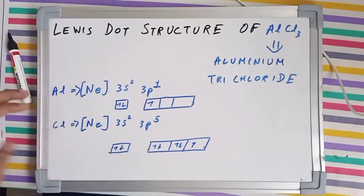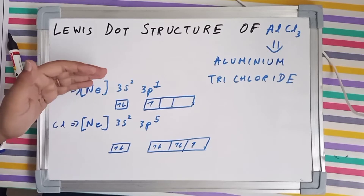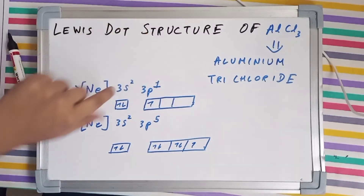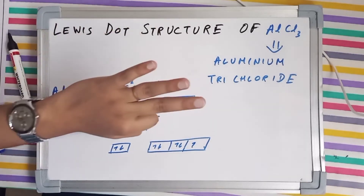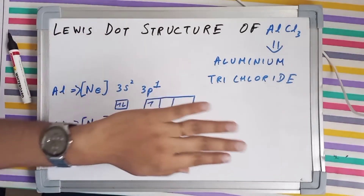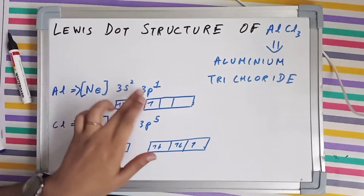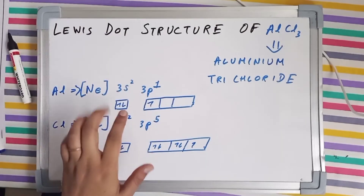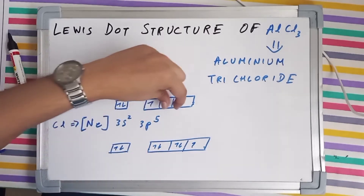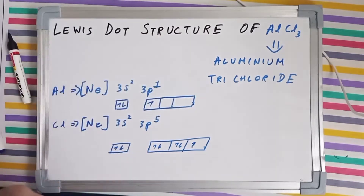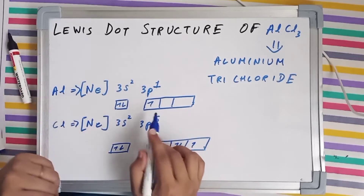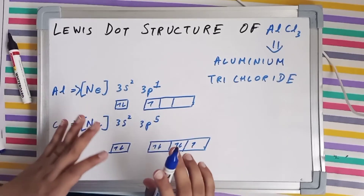The electronic configuration of aluminium is the inert configuration of neon, and then 3s² and 3p¹. The valence shell is the third shell. In the orbital diagrams of the different subshells: 3s has just a single orbital, whereas 3p has three orbitals. 3s has two electrons, whereas 3p has just a single electron.